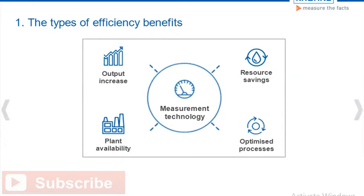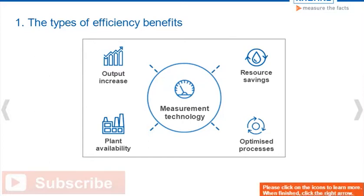In Module 1, you have learned that measurement technology can lead to four different types of efficiency gains in the resource-intensive process industry. Depending on how flow measurement devices are applied, they can cause efficiency in one or more of these ways. To review the four types of efficiency gains, please click on the icons.